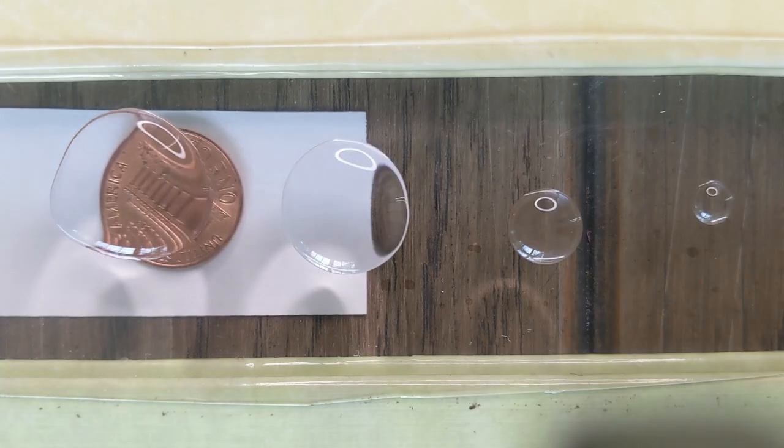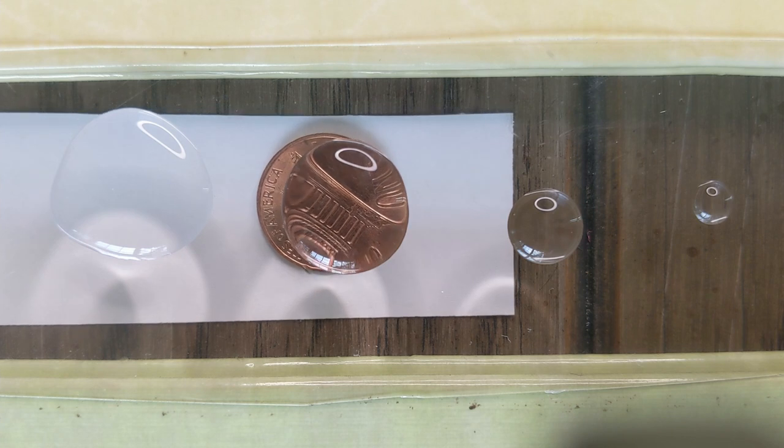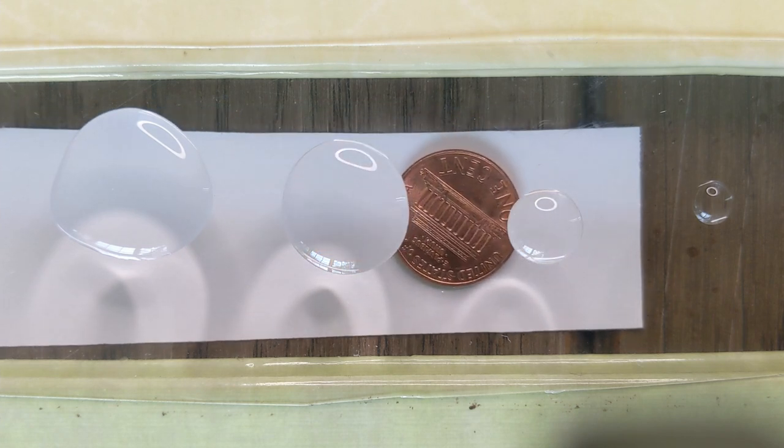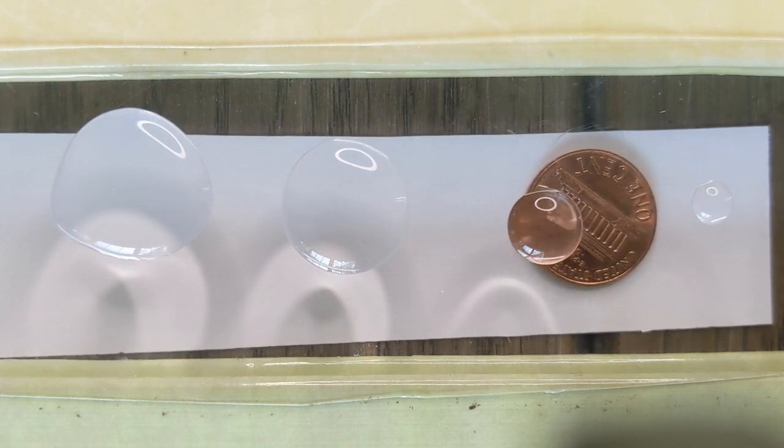This microscope can actually see cells. To understand how this works, there's a very simple demonstration we need to show you first. A drop of water can bend light.